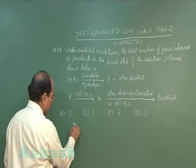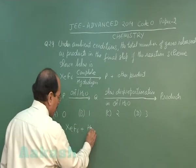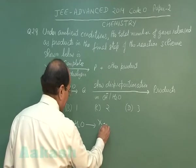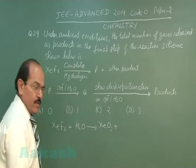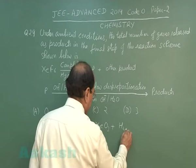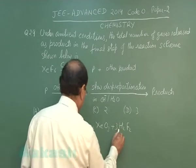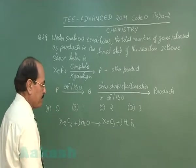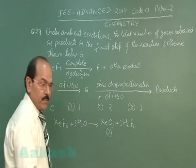Xenon hexafluoride on complete hydrolysis gives xenon trioxide and HF. Xenon trioxide is the product P.